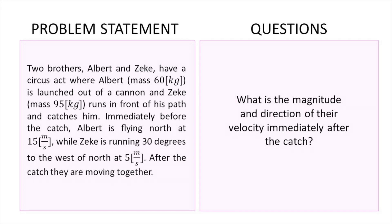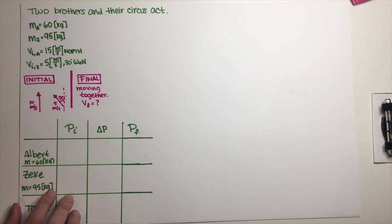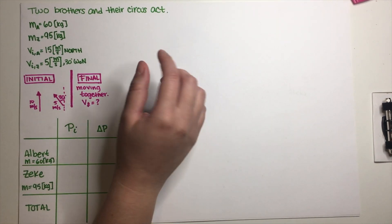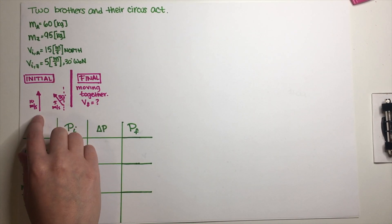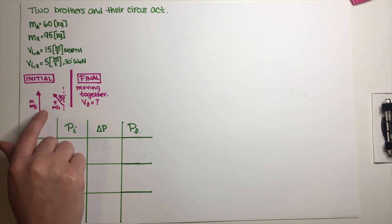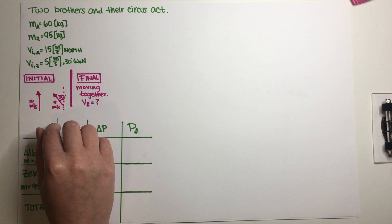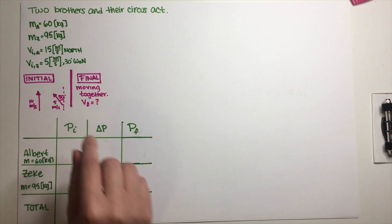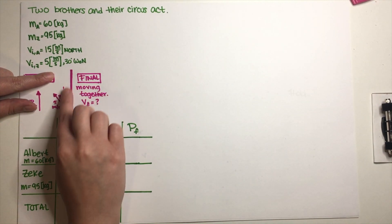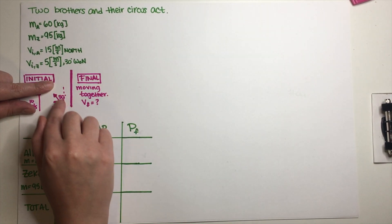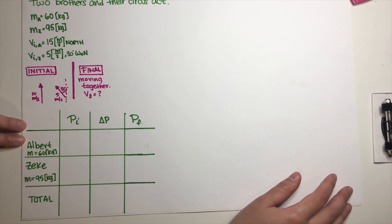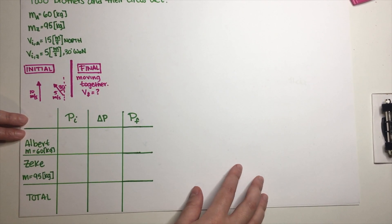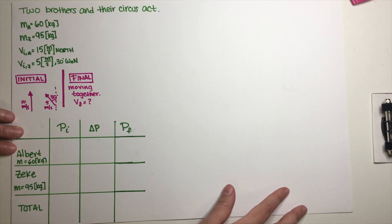The question is: what is the magnitude and direction of their velocity immediately after the catch? I've written all of the necessary information in my notes — the mass of Albert and the mass of Sig, their initial velocities, and a diagram indicating their initial velocity vectors. Albert is moving north, and Sig is moving 30 degrees west of north, meaning you start north and go west 30 degrees. We don't know anything about their final velocity — that is exactly what we have to find. I've also added an empty momentum chart, which is usually very useful for these problems.